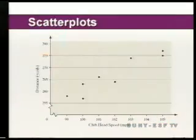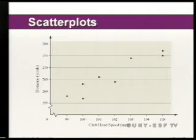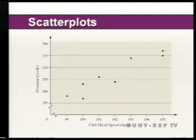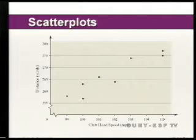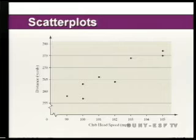Let's look at our first slide. What we're looking at is a scatter plot of club head speed as our explanatory variable and distance that the golf ball travels as our response variable. A scatter plot is simply a plot of the coordinate points for each subject in your data set.